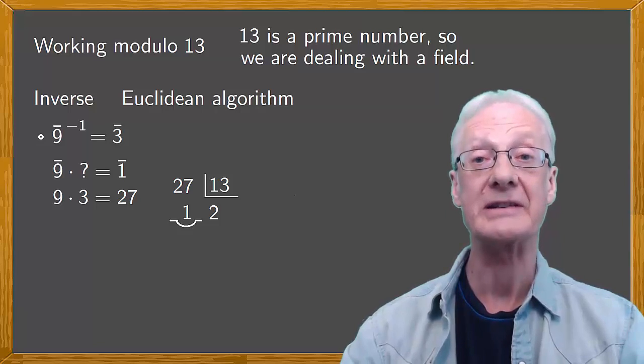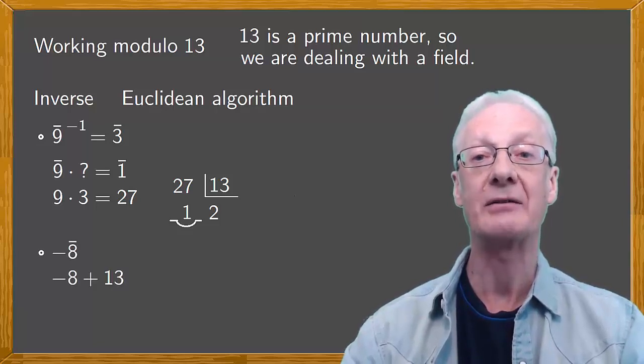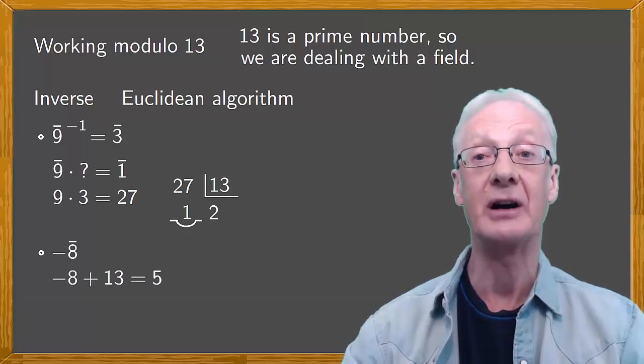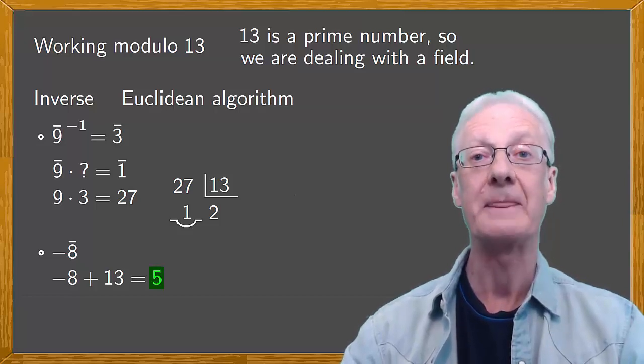Finding the opposite is easy. First of all, reverse the sign. So in the case of 8, this would be minus 8. And then just add 13 to minus 8 to give 5. So the opposite of 8 modulo 13 is 5.